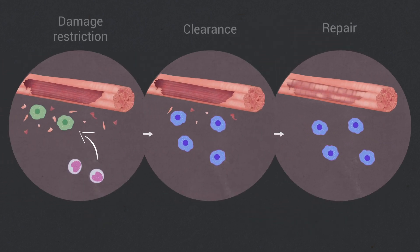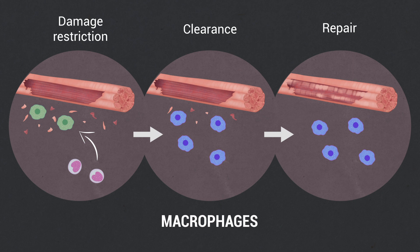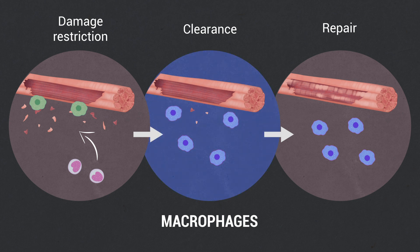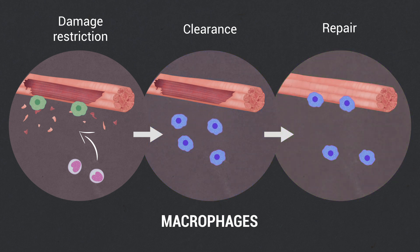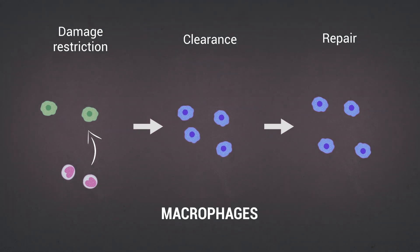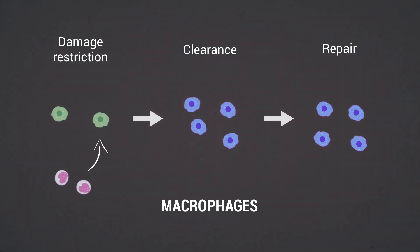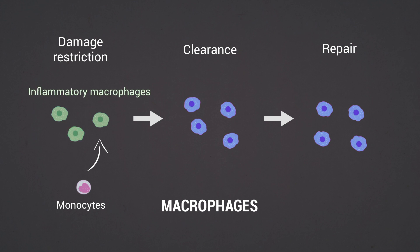Several studies have shown that macrophages are involved in all phases of regeneration, including restriction of damage, clearance of the necrotic debris and apoptotic cells, and repair of the damaged tissue. This highly dynamic process is characterized by an in-situ transition of infiltrating monocytes to an inflammatory and later to a repair macrophage phenotype, which is indispensable for proper regeneration.